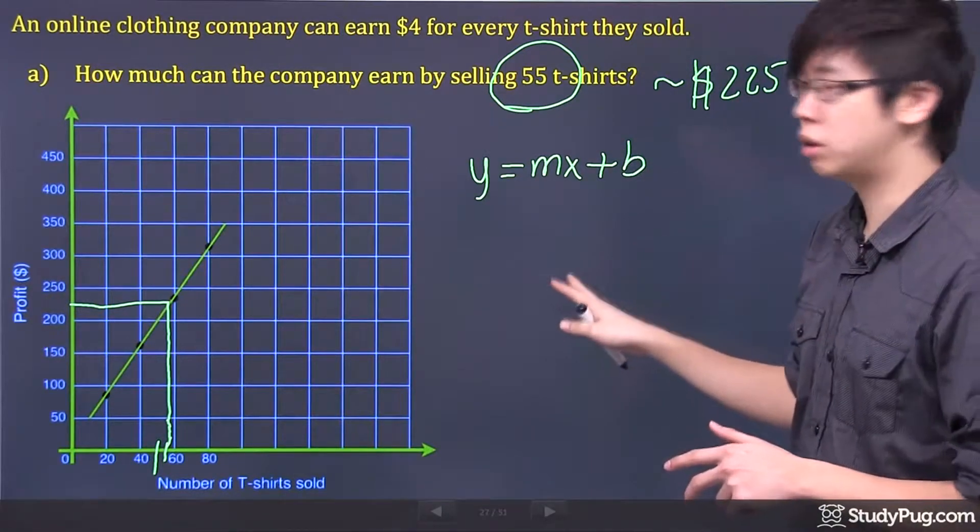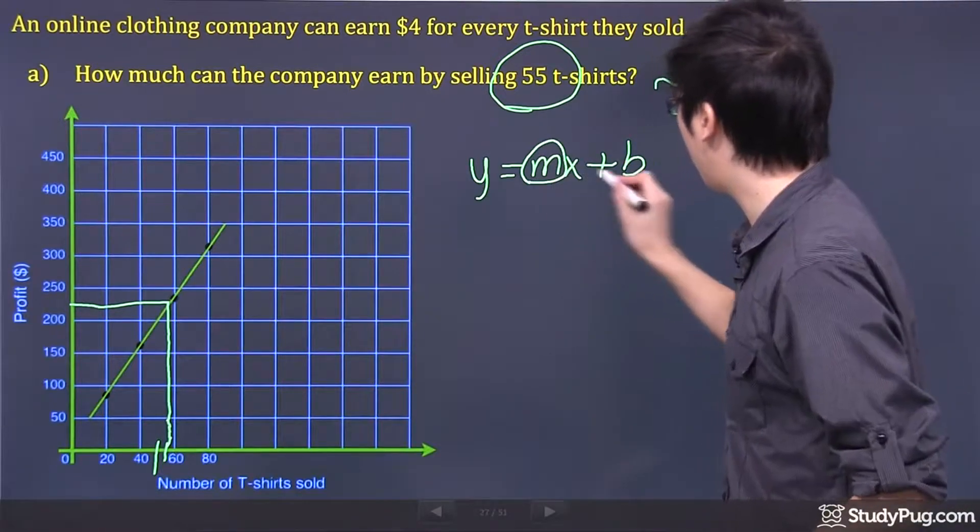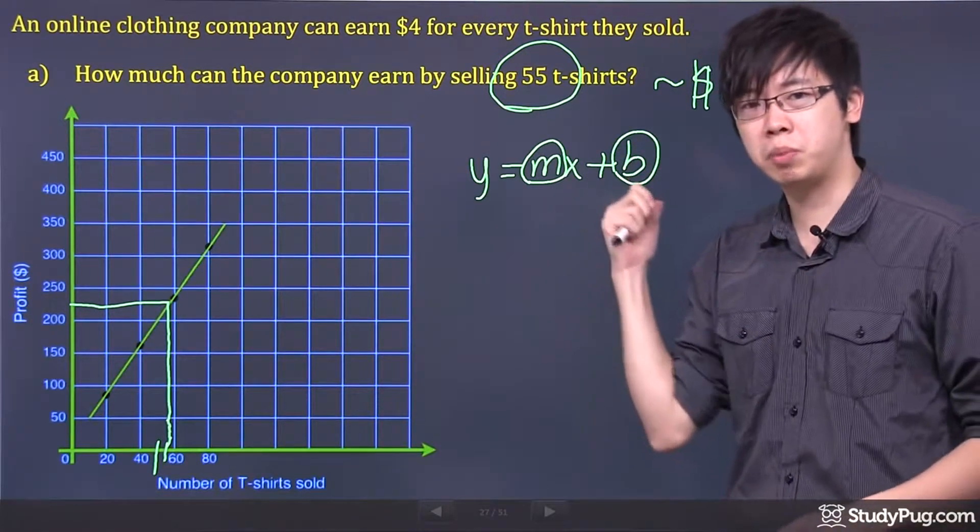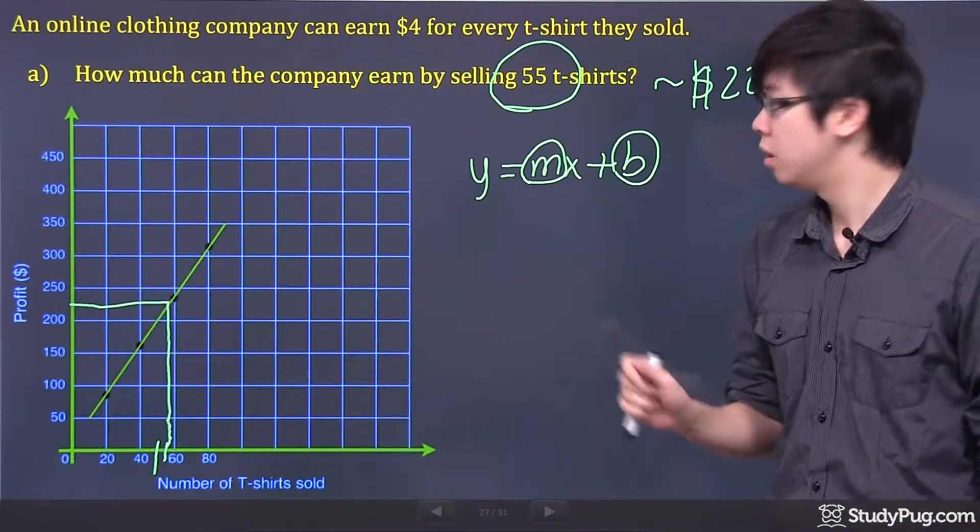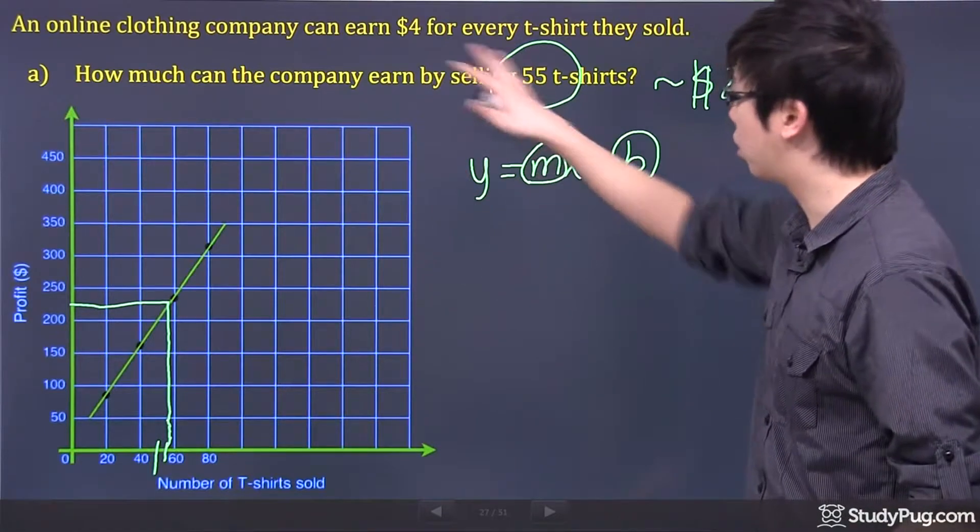So to figure out the equation, you just have to think about this. Now, where is my m and where is my b? Now remember, the b is actually known as the y-intercept. But if you just don't even think about that, just think about the question itself.